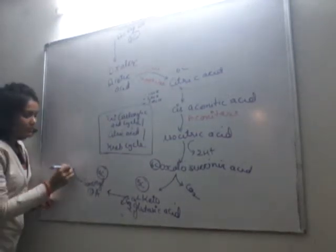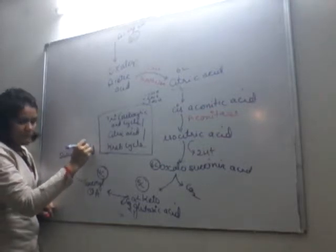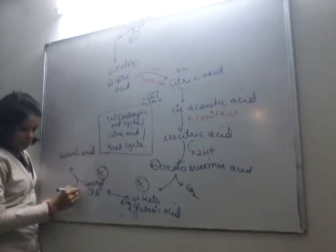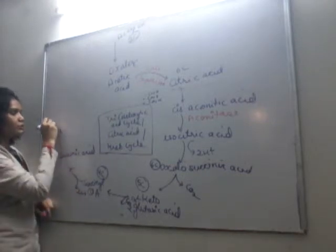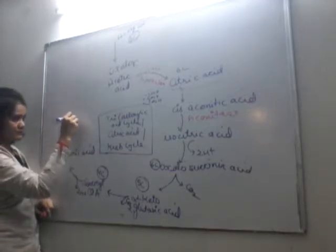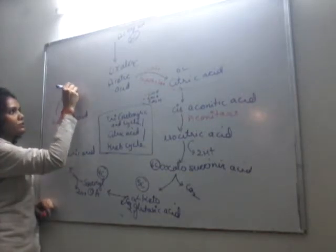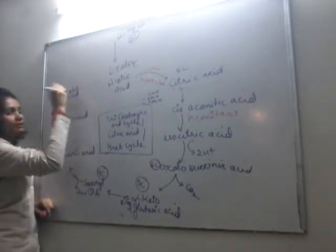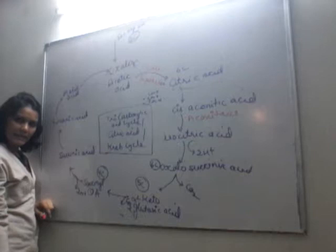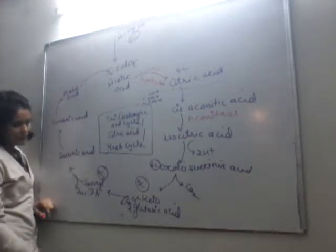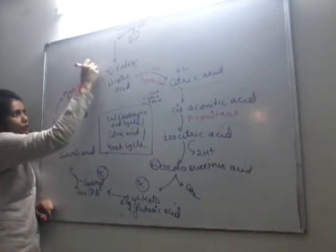Succinyl coenzyme A forms succinic acid, with liberation of two hydrogen ions. Succinic acid then undergoes isomerization to form fumaric acid. Fumaric acid undergoes further isomerization to form malic acid. From malic acid, there is a regeneration step where oxaloacetic acid is recovered back. Here also two hydrogen ions are liberated, and here also two hydrogen ions are liberated.